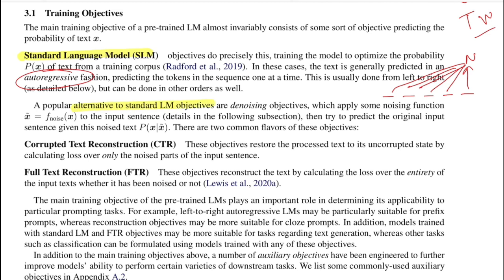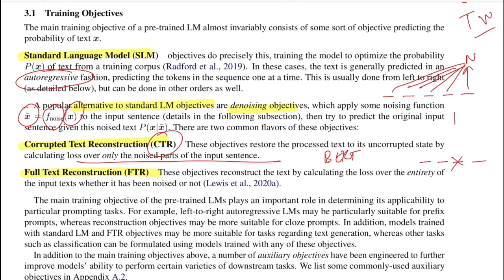Another popular alternative is to introduce a denoising objective, where you have an input sequence X and transform it to a noisy version by applying a noise function. These can be categorized under two headings: corrupted text reconstruction (CTR) and full text reconstruction (FTR). Under CTR, the idea is to calculate loss only from the noisy part of the input. For example, BERT masks one of the words and calculates loss only for that masked token, not for the other words' representations.